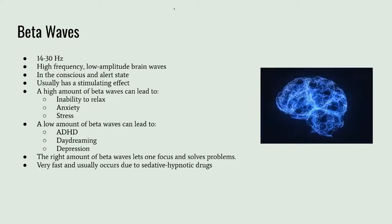Beta waves are kind of the opposite of alpha waves — they have very high frequency and low amplitude. They occur when a person is in a very alert state and usually have a stimulating effect. Beta waves can lead to high stress levels, anxiety, and the inability to relax. A low amount of beta waves can lead to daydreaming, depression, and ADHD. Just the right amount of beta waves can help a person focus and solve problems.